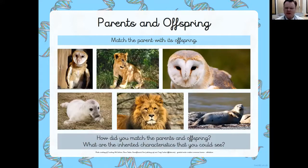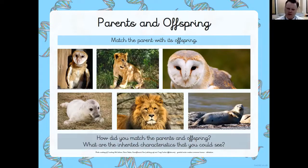Let's have a look at these — you can see the offspring of those creatures. Which ones belong to which parent? Clearly you can see the connections there. They look different when they're young, but they grow up to look more like their parents in terms of body size and shape — for example, in the case of the lion, which has the large mane. What inherited characteristics can you see?